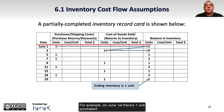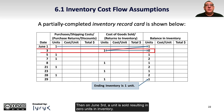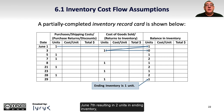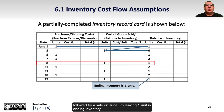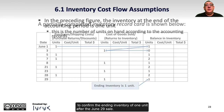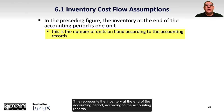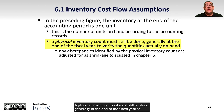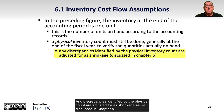On June 1st, one unit is purchased and no unit is sold, resulting in one unit in ending inventory. Then on June 3rd, a unit is sold, resulting in zero units in inventory. Then there's a purchase on June 5th resulting in one unit in inventory, followed by a purchase on June 7th resulting in two units in ending inventory, followed by a sale on June 8th leaving one unit. You should pause the video and follow through these purchases and sales to confirm the ending inventory of one unit after the June 29th sale. This represents the inventory at the end of the accounting period. A physical inventory count must still be done, generally at the end of the fiscal year, to verify the quantities actually on hand. Any discrepancies identified by the physical count are adjusted for as shrinkage, as discussed in Chapter 5.